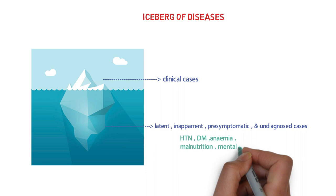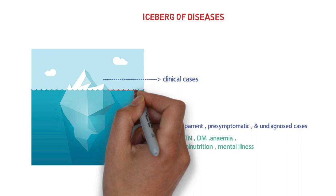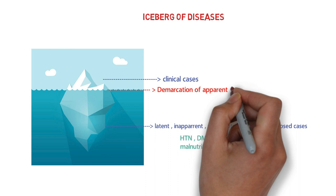Diseases like hypertension, diabetes mellitus, anemia, malnutrition and mental illness follow the iceberg phenomenon. These are the clinical cases, and this is the line of demarcation — the demarcation of apparent and inapparent disease.